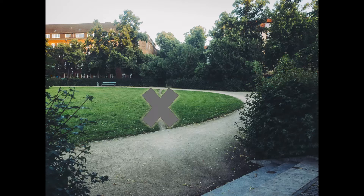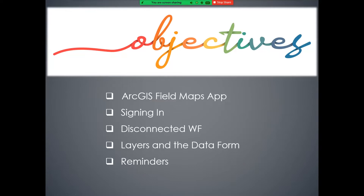Let me cover what we're going to talk about: a bit on the Field Maps app — how to sign in and available resources; the disconnected workflow; and then we'll dive into the two layers in the egg mass treatments application and look at those data forms. I have my iPad and iPhone here to show you in real time, and finally a list of reminders to watch out for.